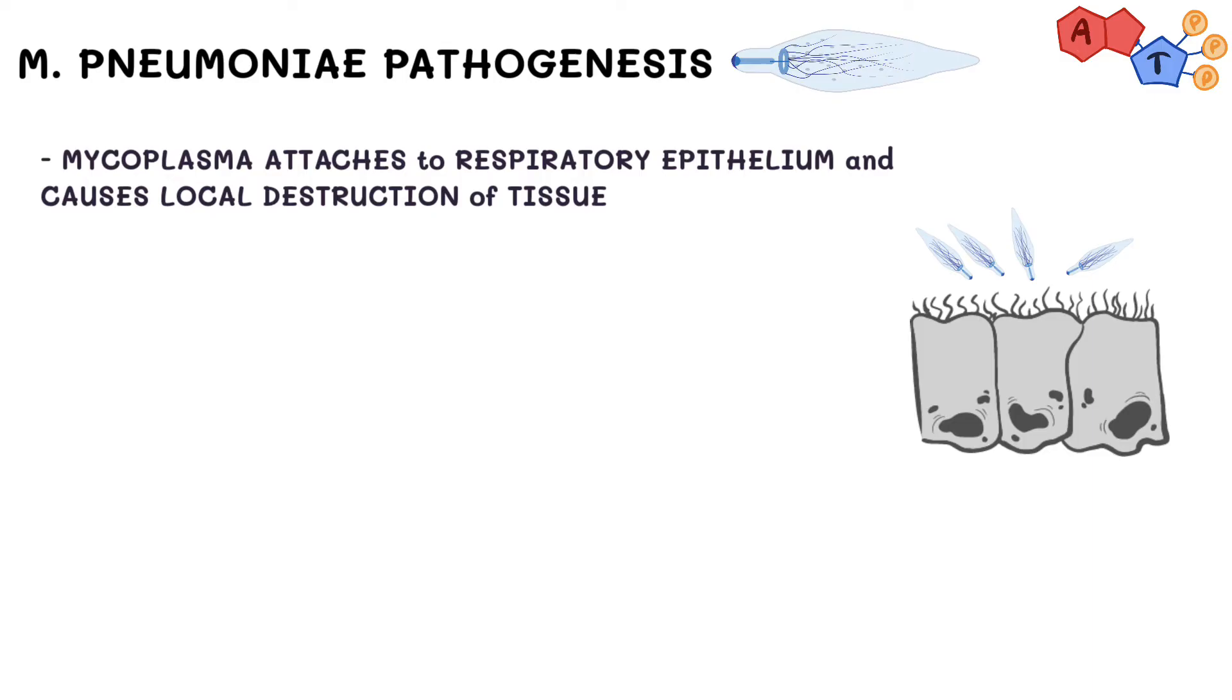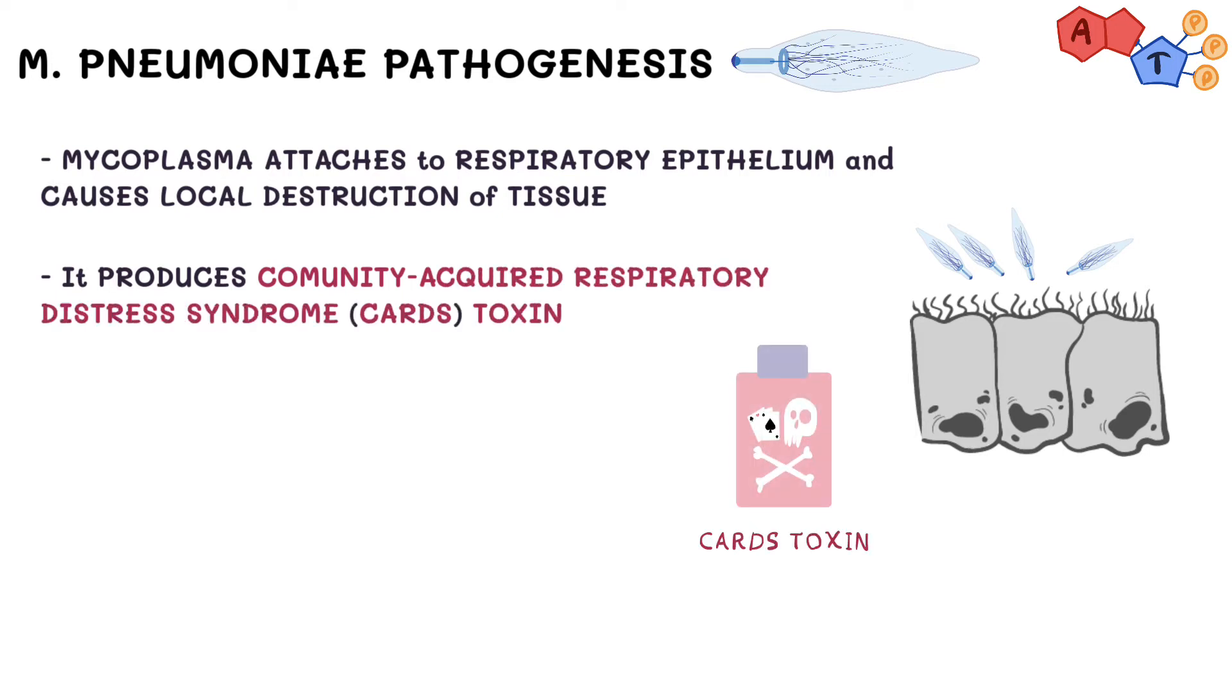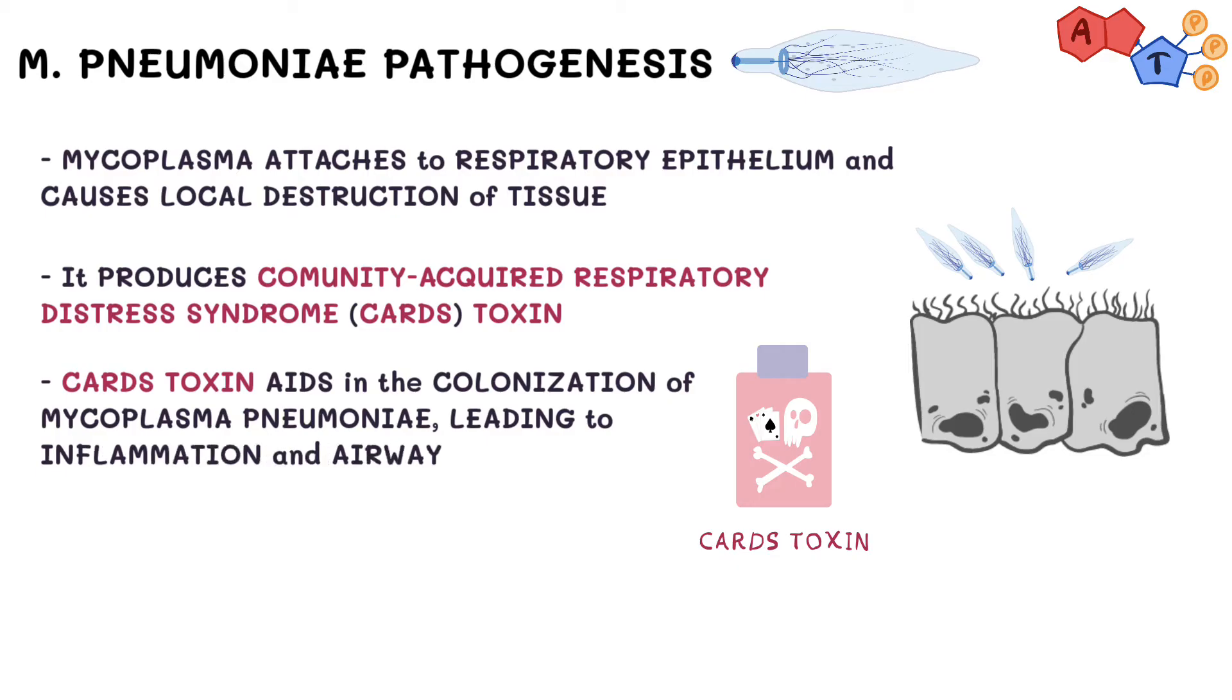And just like other pathogens, Mycoplasma pneumoniae produces its unique virulence factors that aid in its pathogenic pathways. First of all, it produces CARDS toxin, which is known as Community Acquired Respiratory Distress Syndrome toxin. The CARDS toxin aids in the colonization of Mycoplasma pneumoniae, leading to inflammation and airway dysfunction.